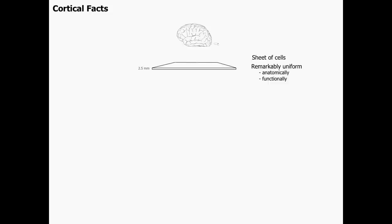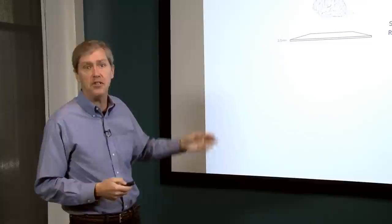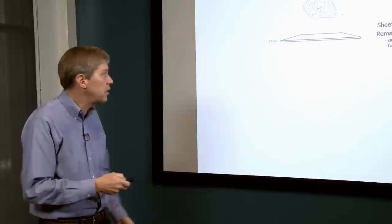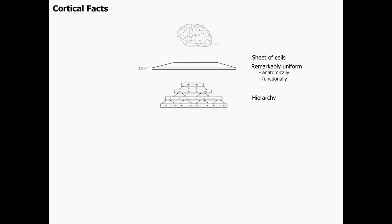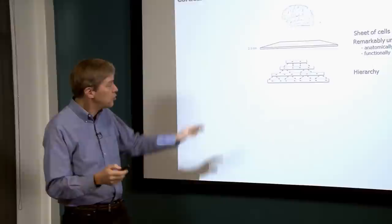The neocortex is also functionally uniform. Even though different parts do sight, sound, and touch, it was speculated over 30 years ago that different parts of the neocortex are actually doing the same thing. What makes the visual part visual is that it's connected to patterns from the eyes; what makes the auditory part auditory is patterns from the ears. In a newborn animal, you can swap the auditory and visual nerves and the auditory cortex becomes visual and the visual cortex becomes auditory. This sheet of cells is organized hierarchically, with regions projecting to each other.